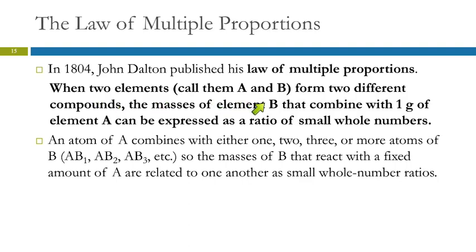When two elements, and we'll just call them A and B, form two different compounds, the masses of element B that combine with one gram of element A can be expressed as a ratio of small whole numbers. Okay. What the heck does that mean? So we just saw with the two samples of carbon monoxide that the ratio of the elements for each sample was the same, right? Because they were the same compound. If we take a different compound that has the same elements in it, we could also find the ratio of carbon to oxygen for that one, right? Or oxygen to carbon, I forget which one it was. What this is saying is that if you take the ratio of those ratios, you'll get a small whole number. I know, that's a lot to digest at 8:30 in the morning.